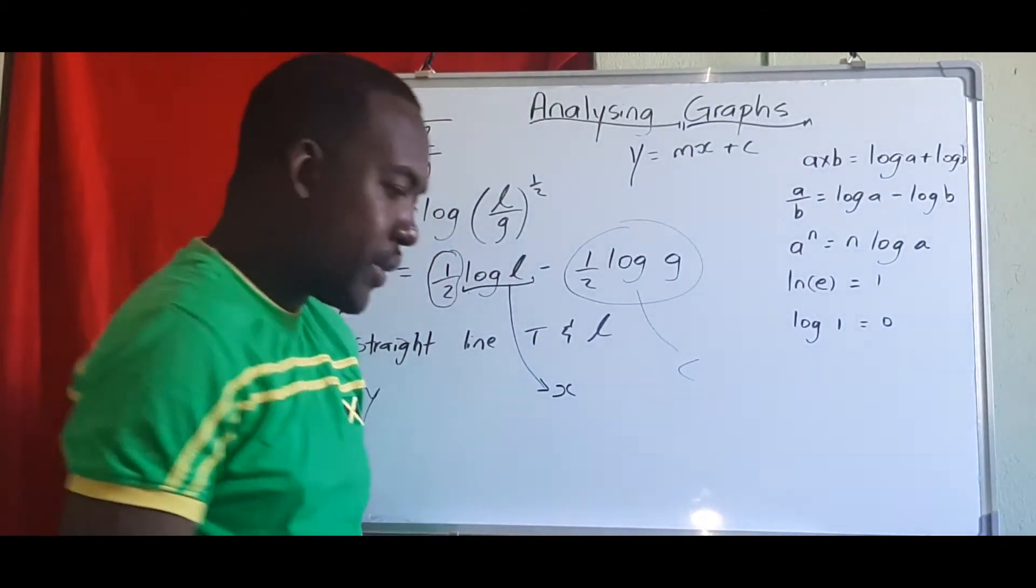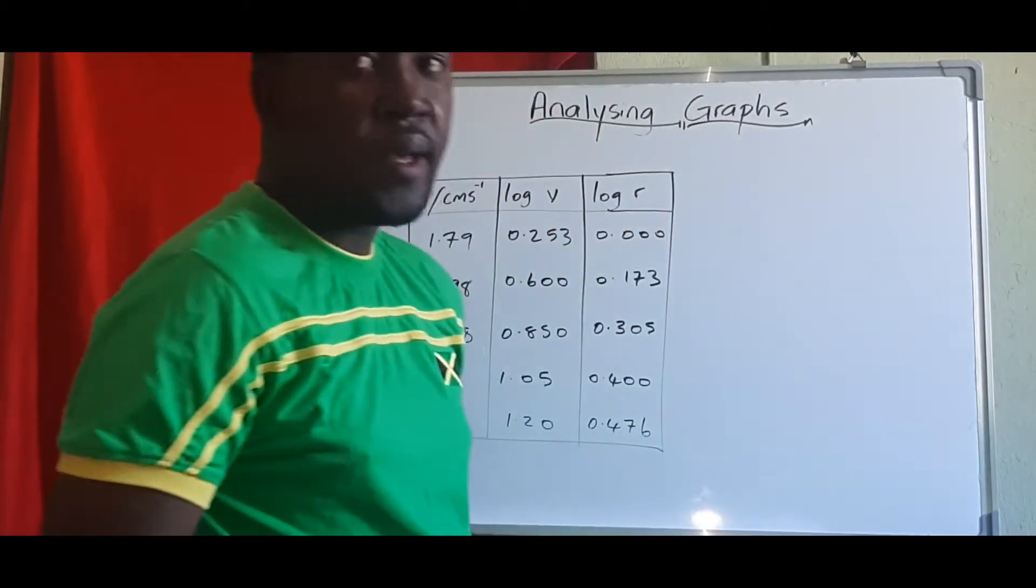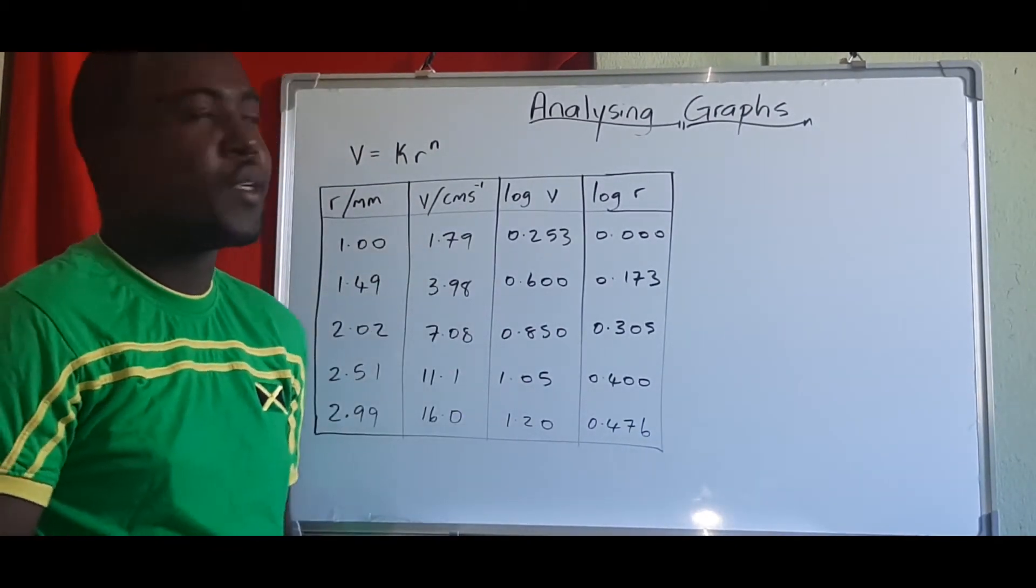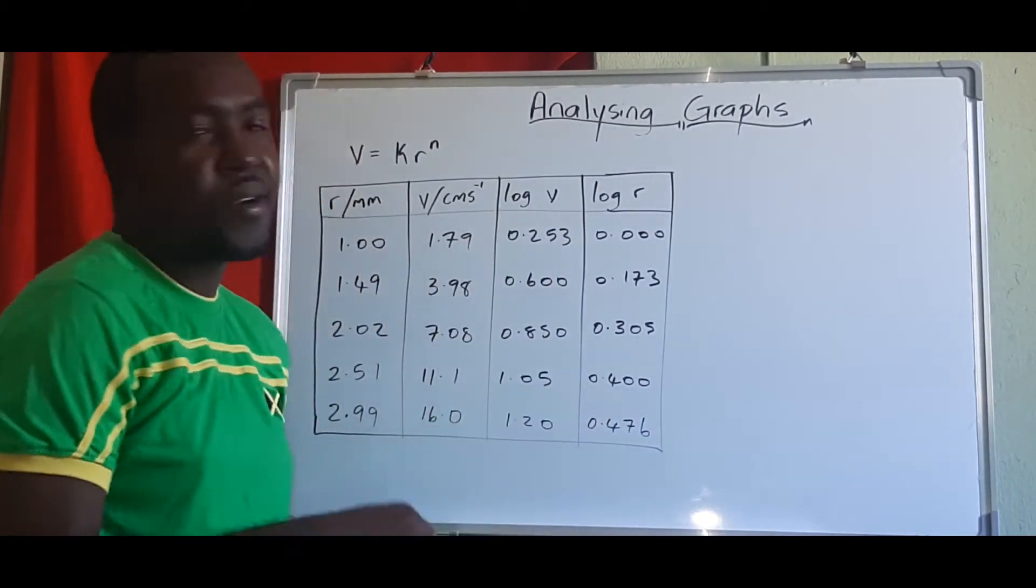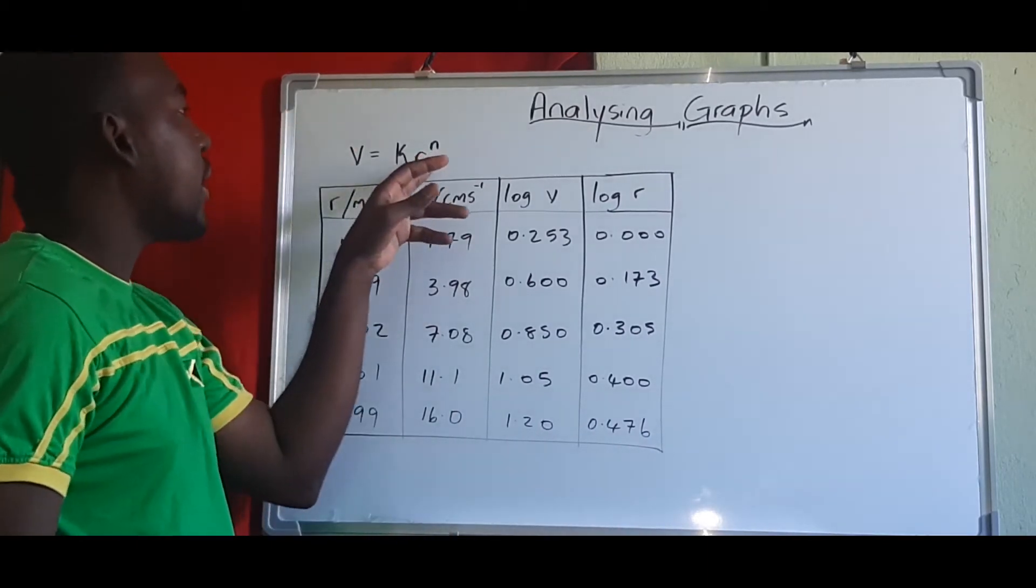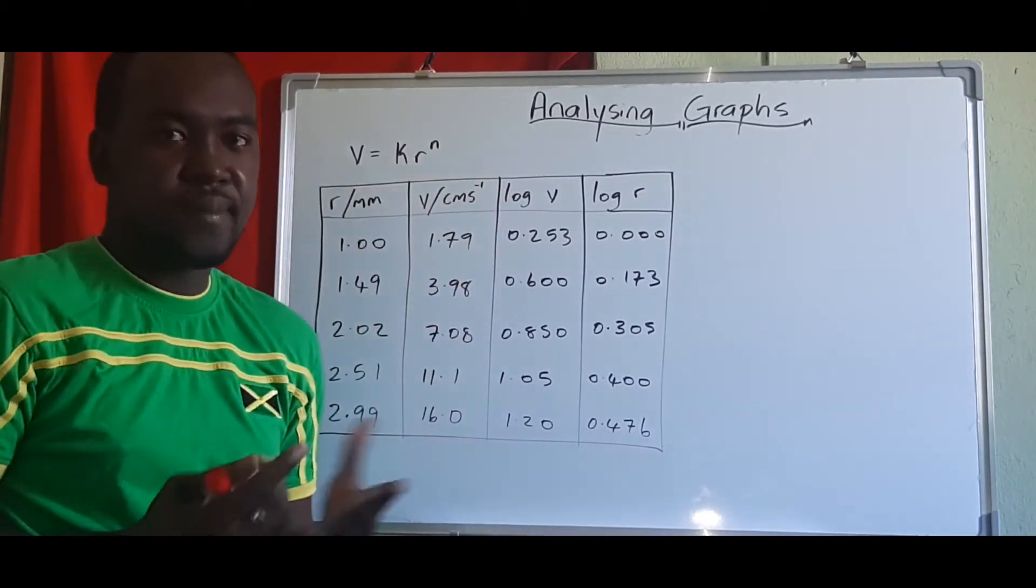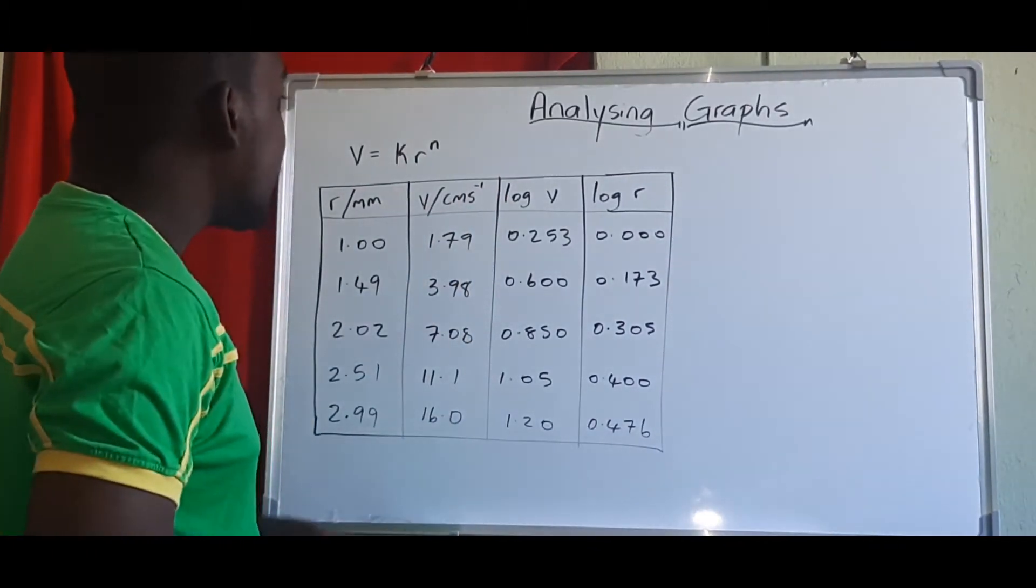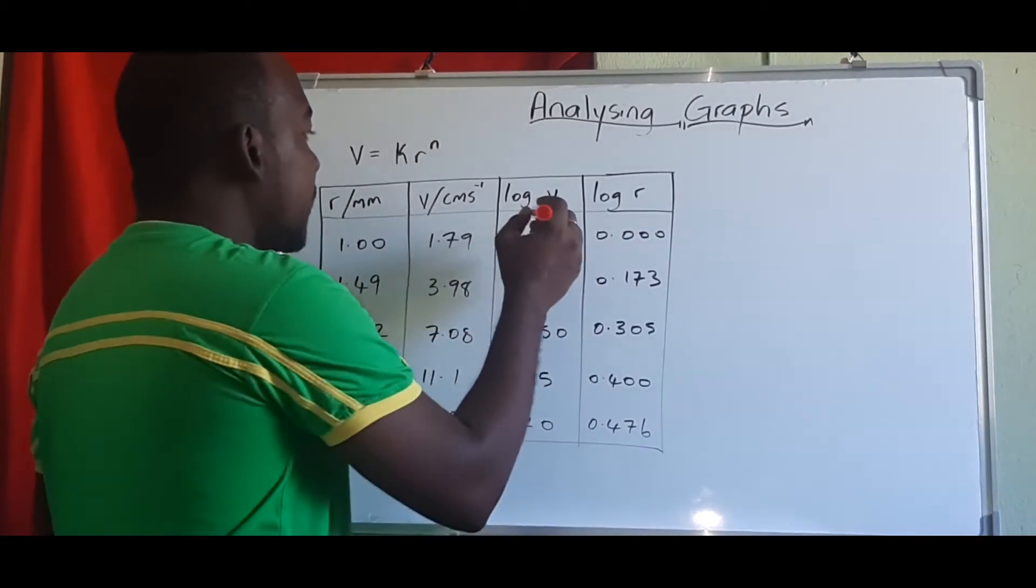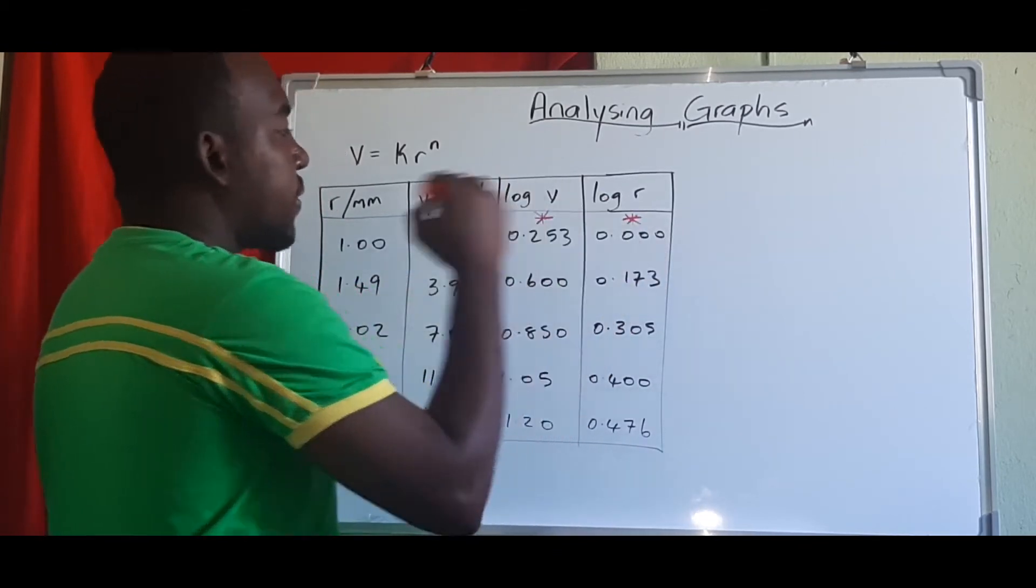So we're going to look at two questions that will help us to understand this. So we're just going to do two questions to help us understand or analyze our graphs. So in this case, we have v equals kr to the n power. So the n only goes for the r. So we're given this table here, and we were supposed to fill out log v and log r.